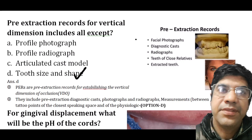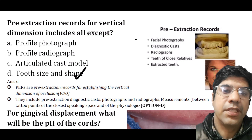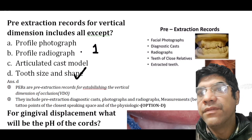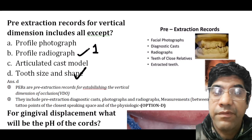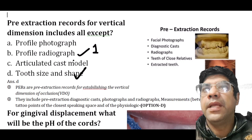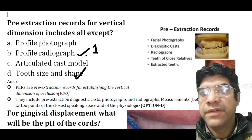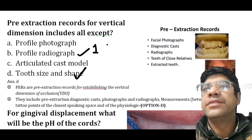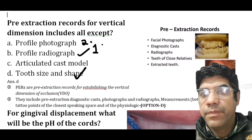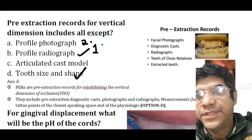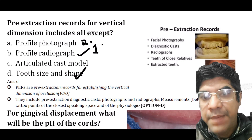The elements included in pre-extraction records are: first, the profile radiograph of the face, which may be used to determine the vertical dimension position. Second is the profile photograph — a side view photograph of the patient's face that helps in assessing facial aesthetics and profile.